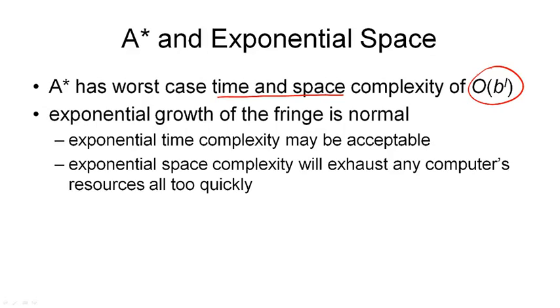And in reality, we will see that this is true. Most of the time, the fringe grows exponentially. Now let's look at this. What does this really mean? Exponential time complexity means when the problem grows by one step, the size of the problem, the time it takes to solve this problem, doubles, or in general, it grows by a factor of b.